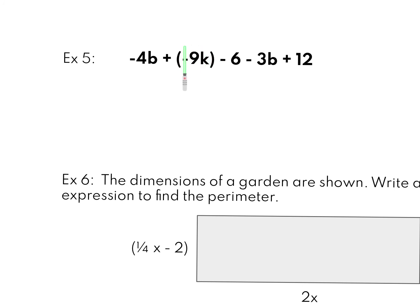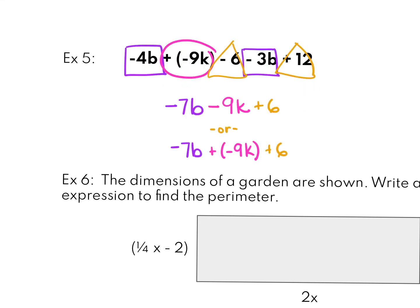Sometimes we use parentheses just to separate a plus sign with a negative. So try this one. I can write this one as negative 7b minus 9k plus 6 or we can leave it how it was here and we can say negative 7b plus negative k plus 6.